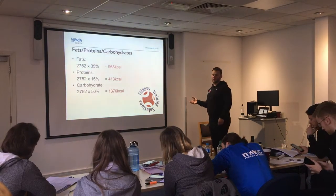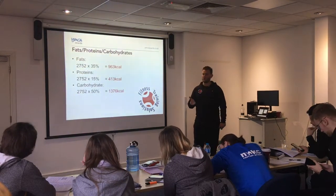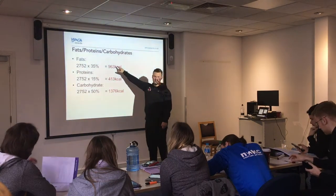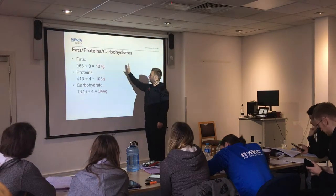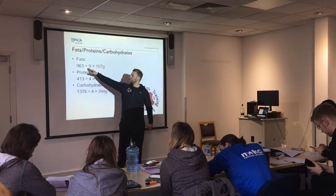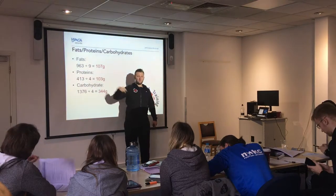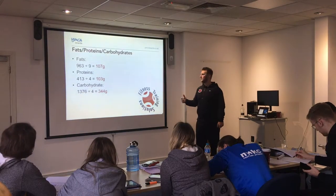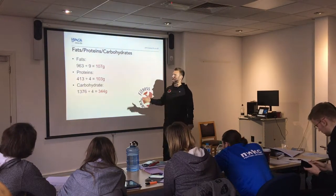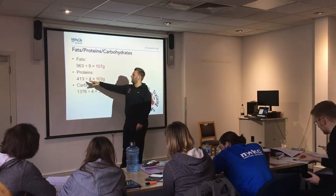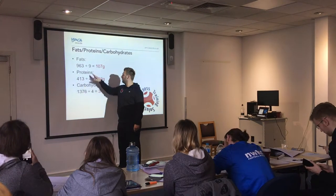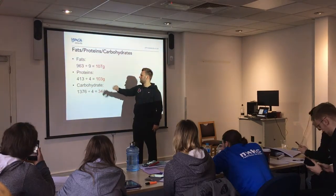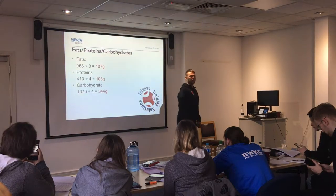Once you know the calorie intake per macronutrient, you can work out how many grams of each food you need. For fat, you divide by 9, because 1 gram of fat equals 9 calories. For protein and carbohydrates, you divide by 4, because 1 gram of protein or carbs equals 4 calories. So this person needs 107 grams of fat, 103 grams of protein, and 344 grams of carbohydrates in their diet.